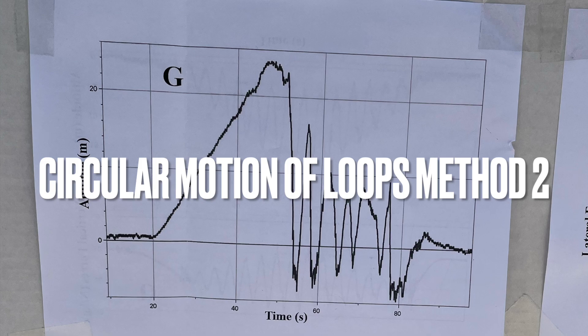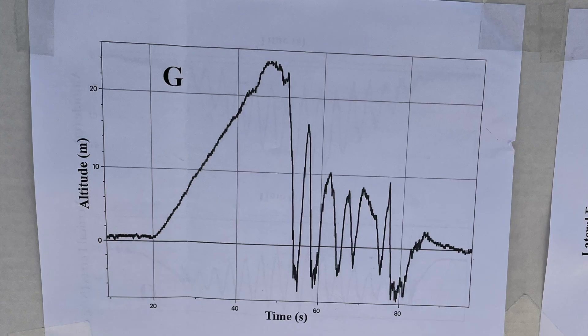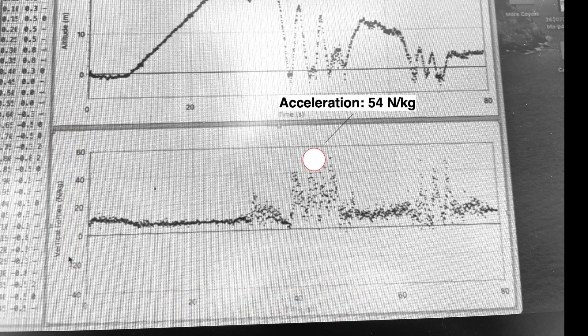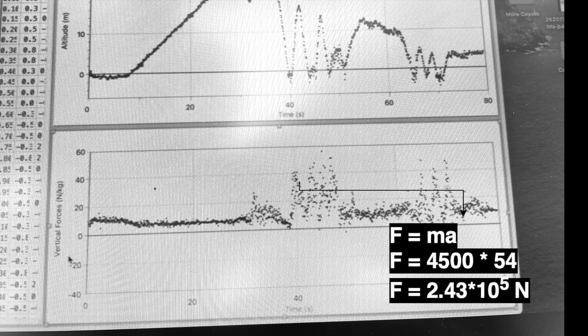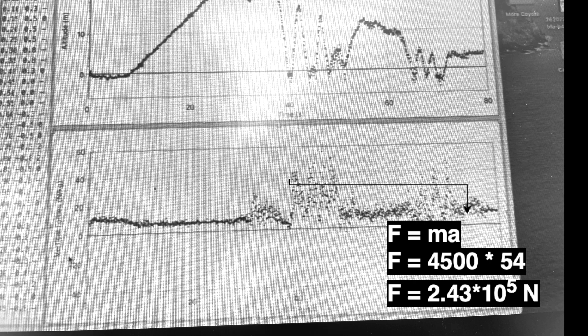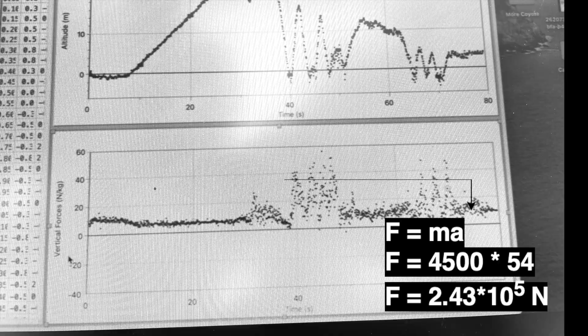We were able to use previous data on the demon that used an accelerometer. And we're able to graph altitude versus time and more importantly, acceleration versus time. Now using these graphs that were done by the association of physics and math days, we were able to see that the acceleration at the top of the circular loop is around 54 Newtons per kilogram. And so, what we're able to do is plug this into Newton's second law equation and solve for the force yielding around 2.43 times 10 to the 5 Newtons as our downward centripetal force at the top of the loop.